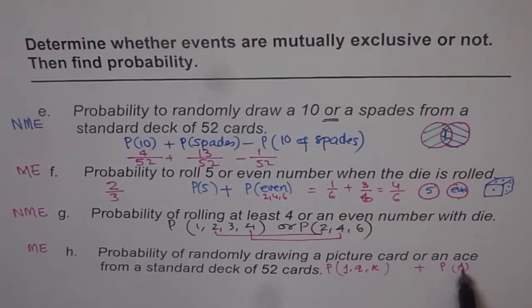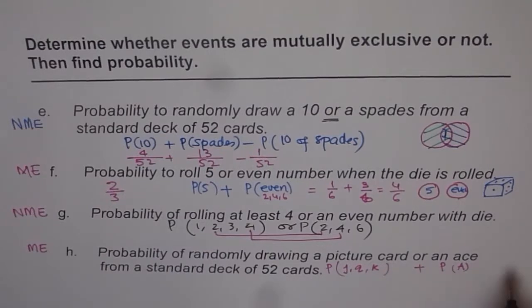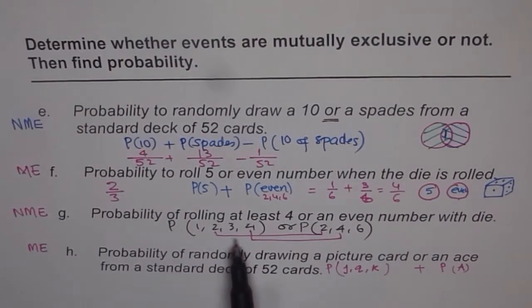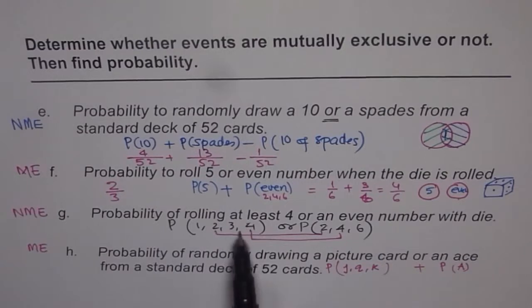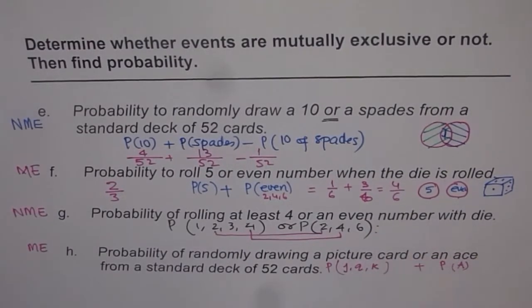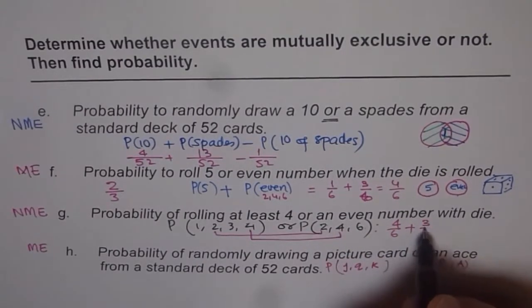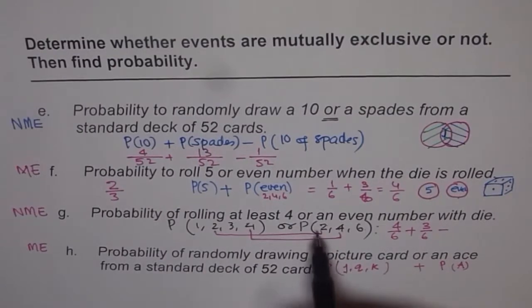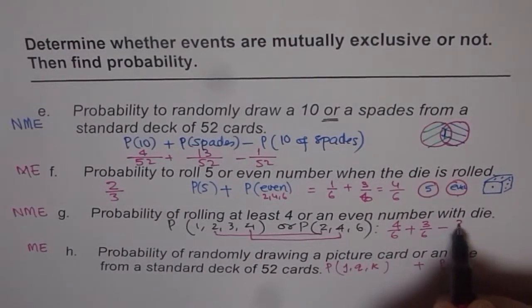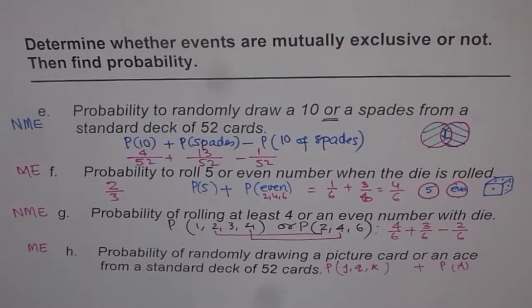The answer for Part H is 12 over 52 for picture cards — there are 12 picture cards (jack, queen, king in four suits) — plus 4 over 52 for the four aces. Add them up and simplify. Now returning to Part G: probability of rolling at least 4 gives 4 out of 6 (the set {1,2,3,4} has been reconsidered — numbers at least 4 are 4, 5, 6, giving 3/6). Plus probability of even numbers is 3 out of 6. Minus 2 over 6 for the common elements 2 and 4. That gives the answer for Part G.